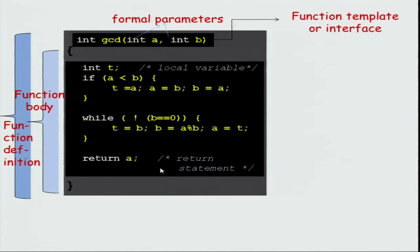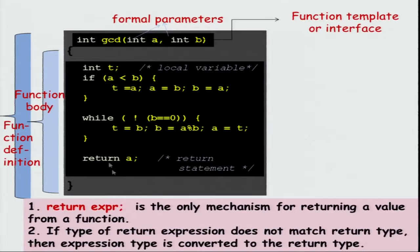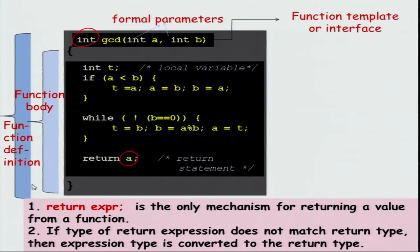Now let us come back to functions. The function definition includes the function body, which is the logic, and the heading — the declaration, also called the type signature. The type signature has arguments like a and b, which are called the formal parameters. The return expression is the only mechanism for returning a value from a function. If the type of the return expression does not match the declared return type, the return expression is converted to that type and then returned, which might lead to some undesirable behavior.